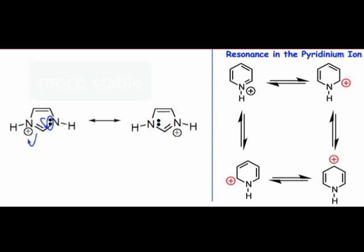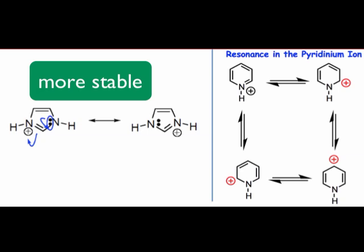Thus, we would expect imidazole to be more basic than pyridine because its conjugate acid is more stable than that of pyridine.